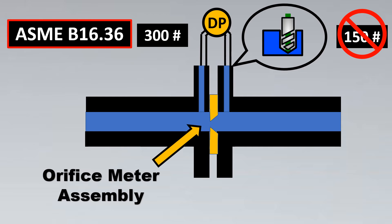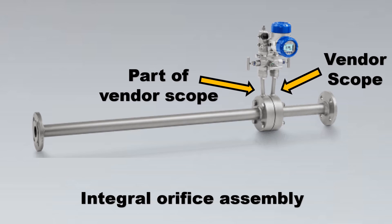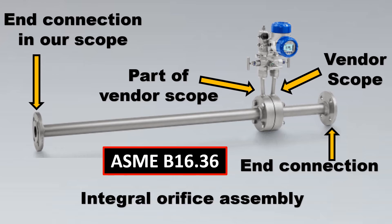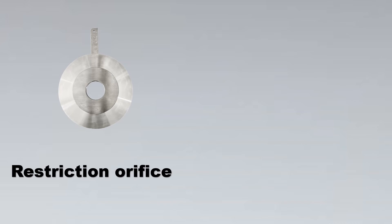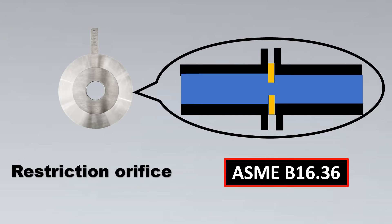For an integral orifice assembly, these are part of the vendor scope, and the end connections provided have no holes drilled into them. So there is no need to specify ASME B16.36 for integral orifice meters. Similarly, a restriction orifice simply puts a restriction in the line of flow with no differential pressure to be measured, so the flanges don't have to be drilled — and hence we don't need ASME B16.36 for restriction orifices either.